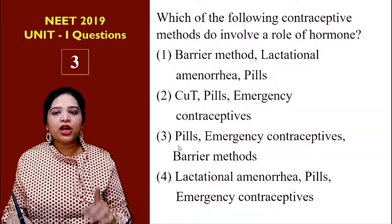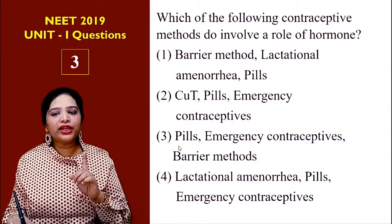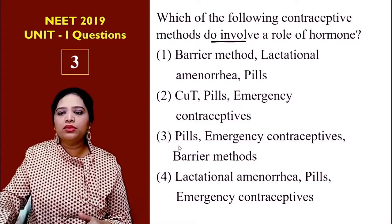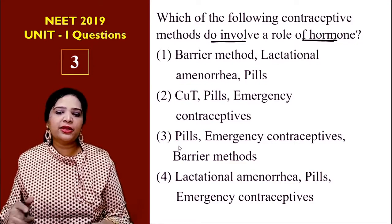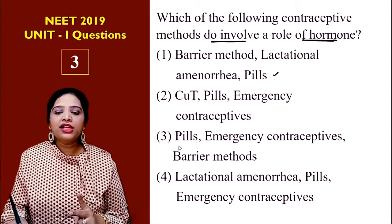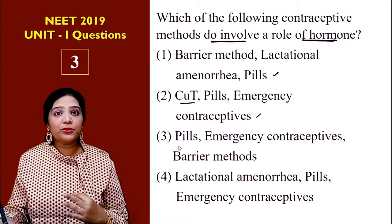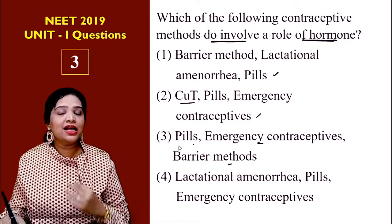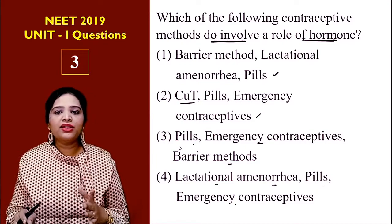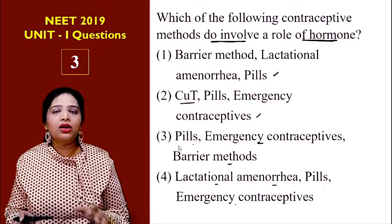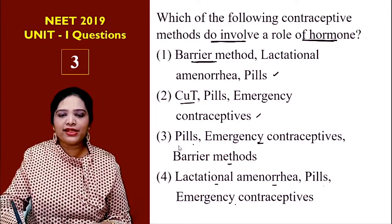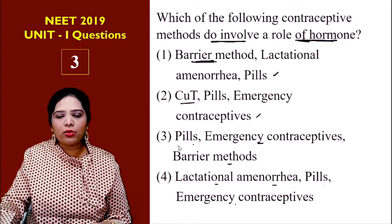Now let us move on to the third question. Which of the following contraceptive methods involve a role of hormones? The options are: barrier method, lactational amenorrhea, pills; CUT copper T, pills, emergency contraceptive; pills, emergency contraceptive, barrier methods; and lactational amenorrhea, pills, and emergency contraceptive. We know that barrier methods do not have any hormonal activation or control because they are just external — like condoms. So barrier methods do not involve hormones.